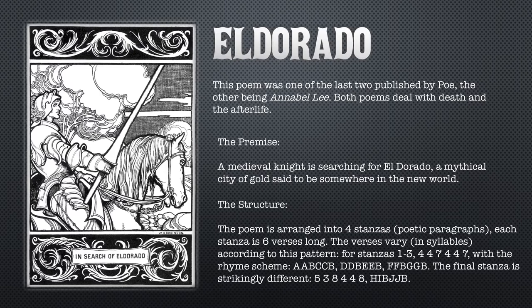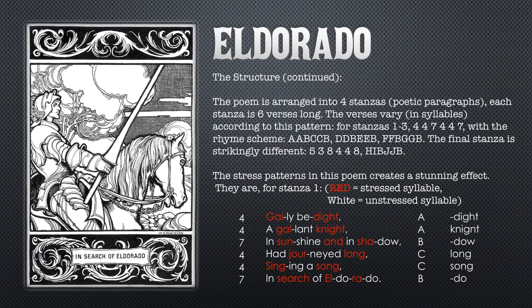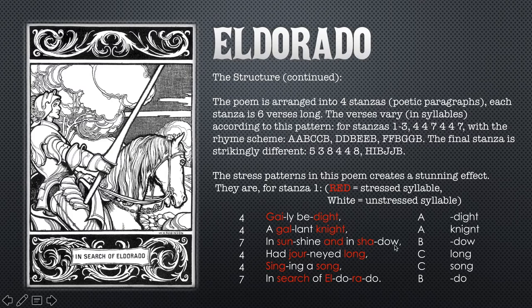Now let's look at the first stanza. I've marked it out to show the verse lengths. 'Gaily bedight' has four syllables. 'A gallant knight' — that's also four syllables, rhyming with 'bedight' — so those are both 'a'. 'In sunshine and in shadow' — that's b. 'Had journeyed long' — that's c. 'Singing a song' — that's c. 'In search of El Dorado' — that's b. So 'shadow' and 'El Dorado' rhyme, forming the b rhyme.